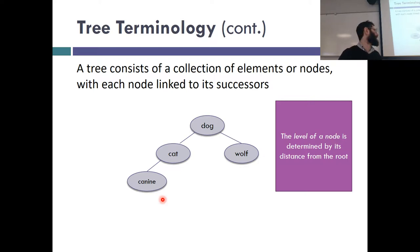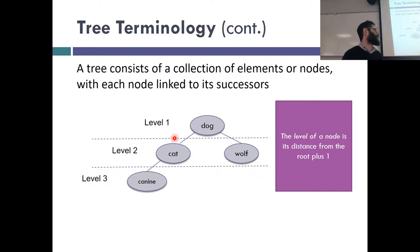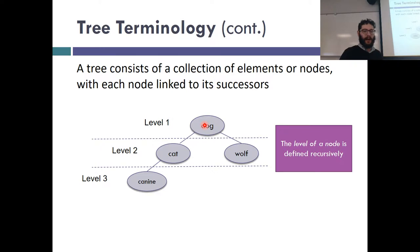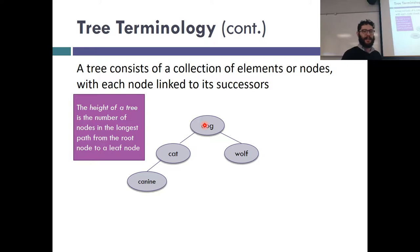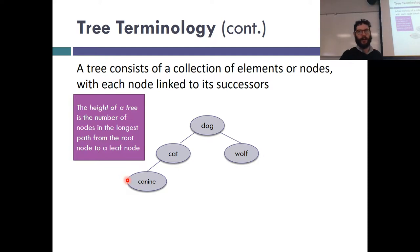The level of a node is basically its distance from the root — how far down the tree are you? If you're at the top, you're level one; at the second row, you're level two. It's your distance from the root plus one. The height of the tree determines how big it is and what the runtime will be — it's the longest path from the root to a leaf node. The height of this tree is three, because the longest path is dog → cat → canine.